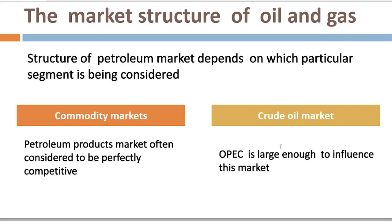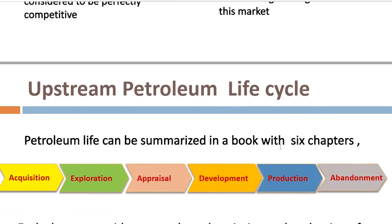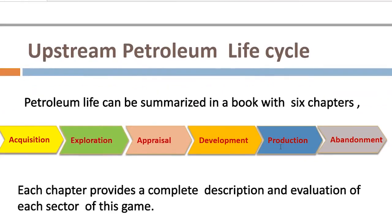Now we will discuss the upstream petroleum life cycle. Our projects are divided mainly into six phases: acquisition, exploration, appraisal, development, production, and abandonment. Each phase provides a complete description and evaluation of each stage. Our industry is a gamble between the government and oil and gas companies, and we need to understand the structure to win.